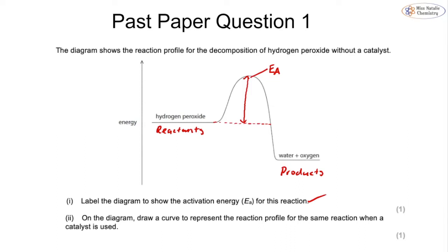Part two asks us to draw a curve representing the reaction profile for the same reaction when a catalyst is used. Be very careful that the curve follows the same shape but is shorter — starting from the hydrogen peroxide, going up to a smaller peak, then coming down and joining with the water. You can see the smaller curve with a lower activation energy for the catalyzed reaction.